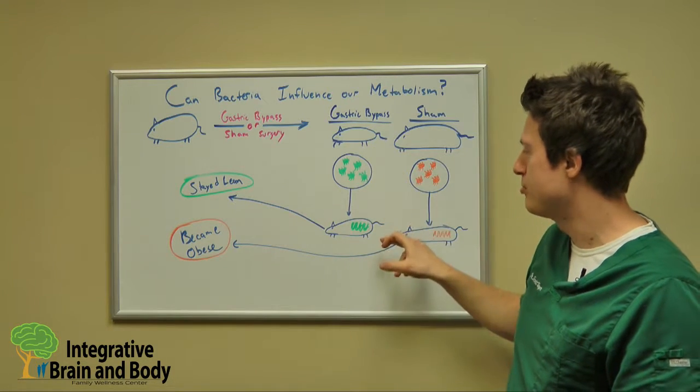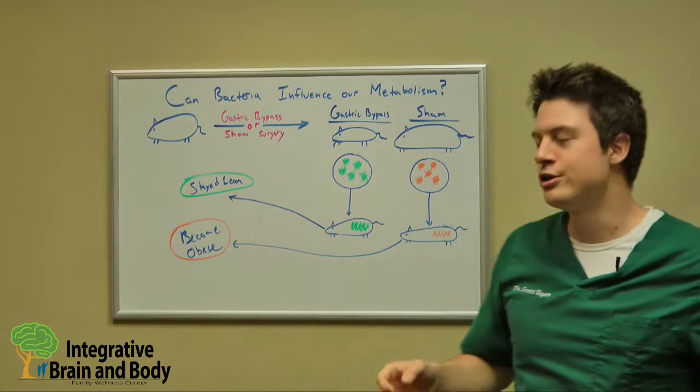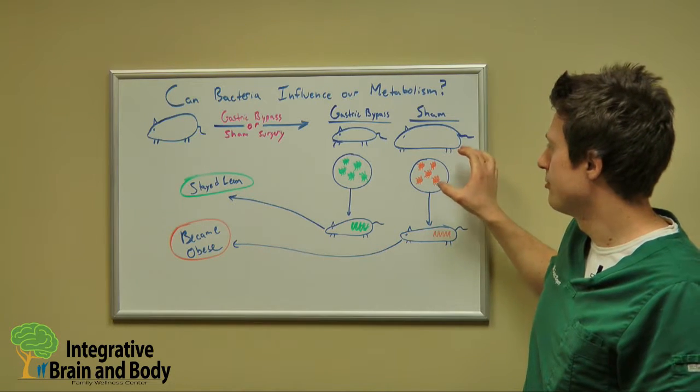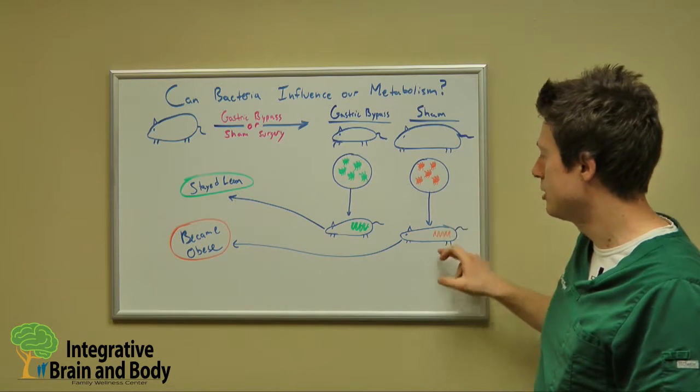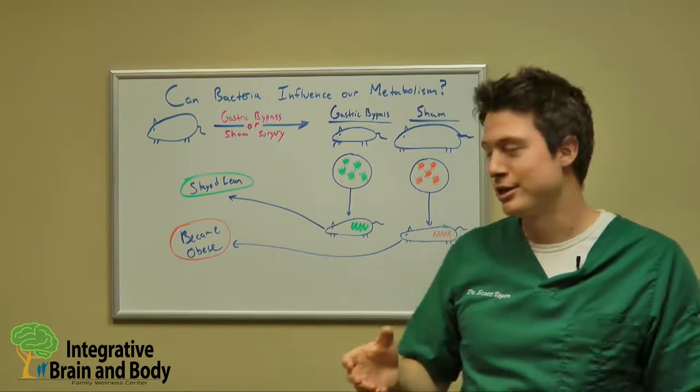The bacteria from the lean mice kept the new mice lean. But even more interesting, the bacteria from the overweight mice, when put into a lean mouse, caused the mouse to put on pounds and become obese.